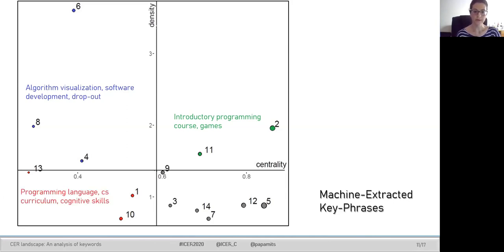Emerging or disappearing topics were also detected and are shown in quadrant 3, such as programming languages, CS curriculum, and cognitive skills.